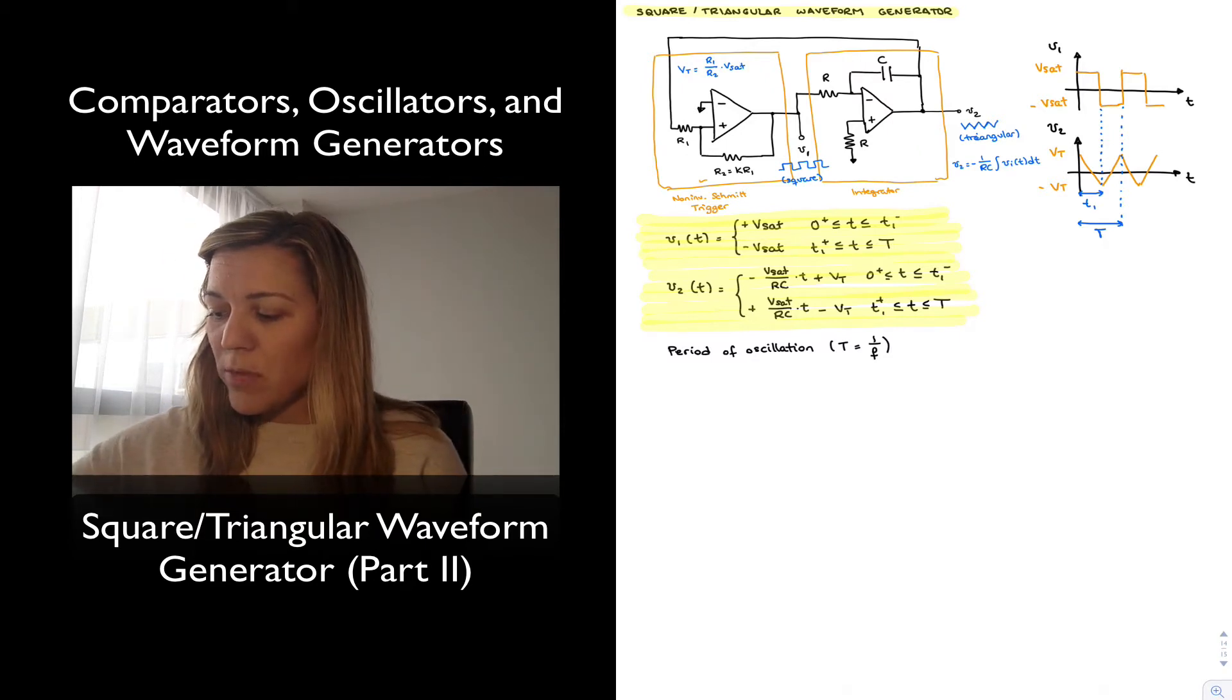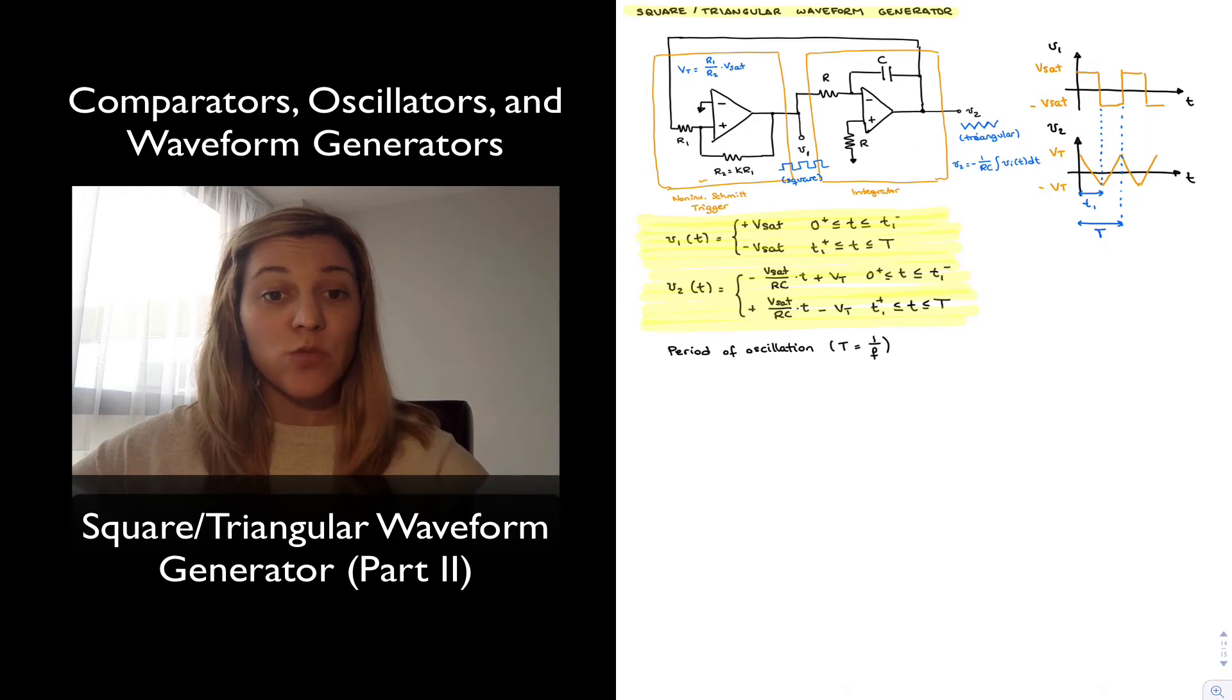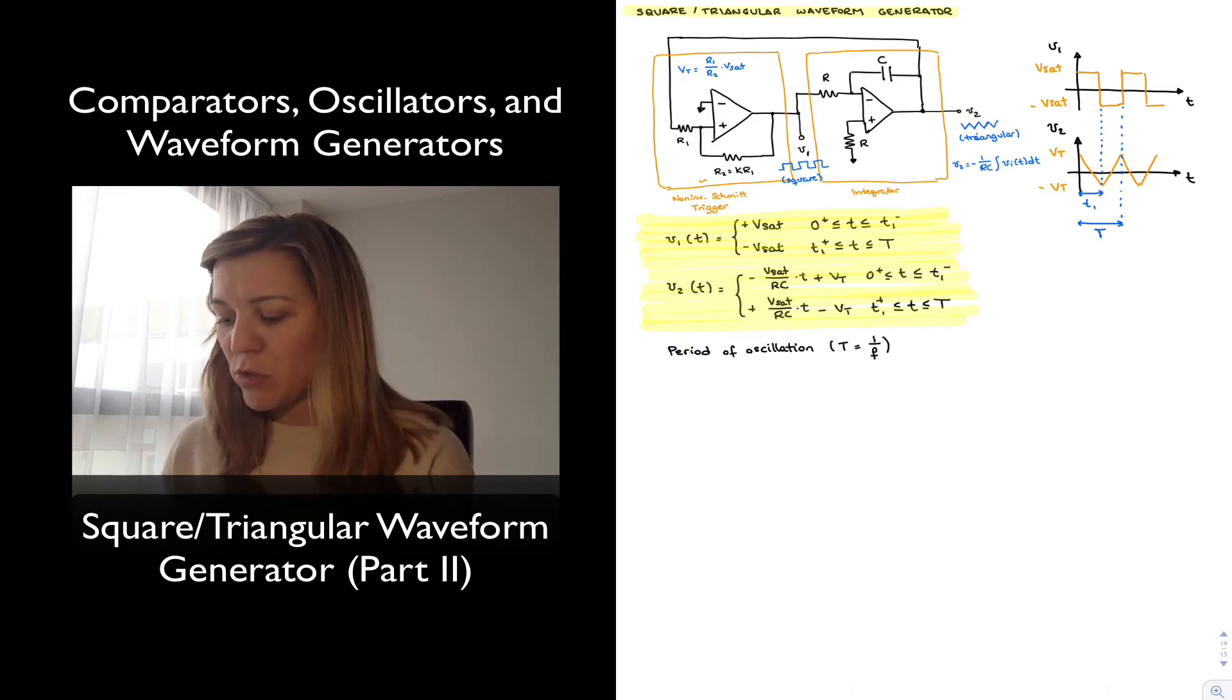And notice I have drawn in my graphs on the right hand side T1 as being equal to the point from the start point of zero to the point where the circuit switches state. That's T1, which is half a period, and then when the circuit switches state again back to its original state, that comprises one period. So it would be one square wave, or in the case of the triangular, one negative slope plus all the way to the end of the positive slope.